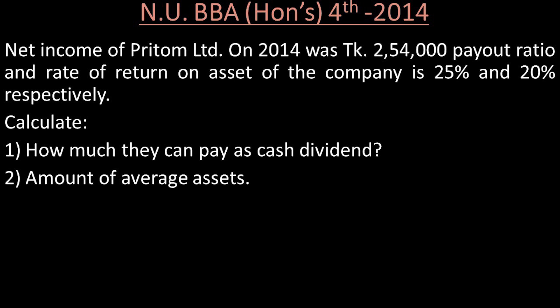The question is: the Net Income of Pritom Limited in 2014 was 2,49,000 taka. The payout ratio and rate of return on assets of the company are 25% and 20% respectively. So the Net Income of Pritom Limited in 2014 was 2,49,000, the payout ratio is 25%, and the rate of return on assets is 20%.